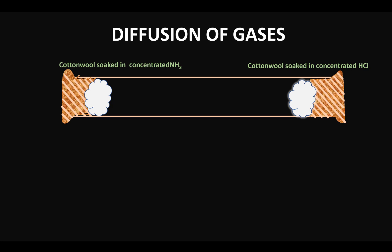you would have found that there is a white colored ring that will be seen to form towards the side which has the cotton wool soaked in concentrated hydrochloric acid, and it is confirmed that this white ring